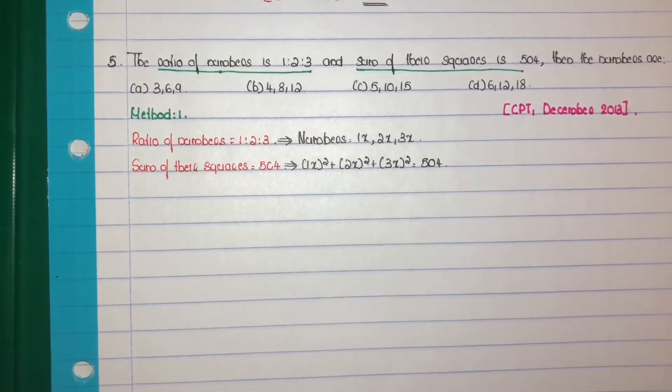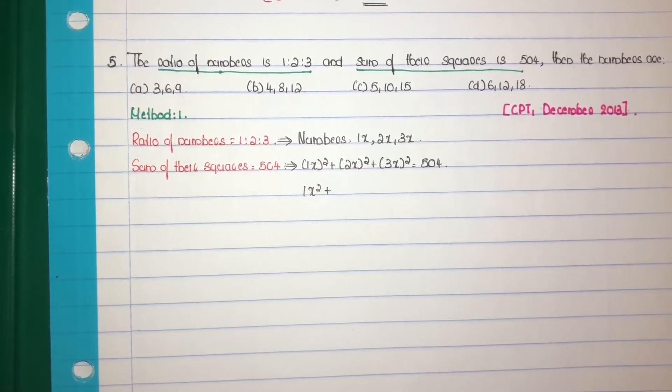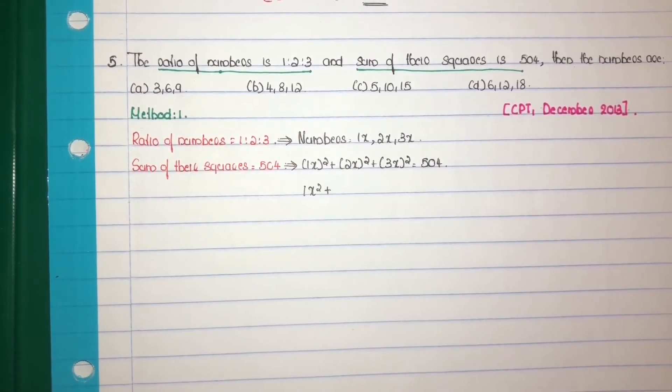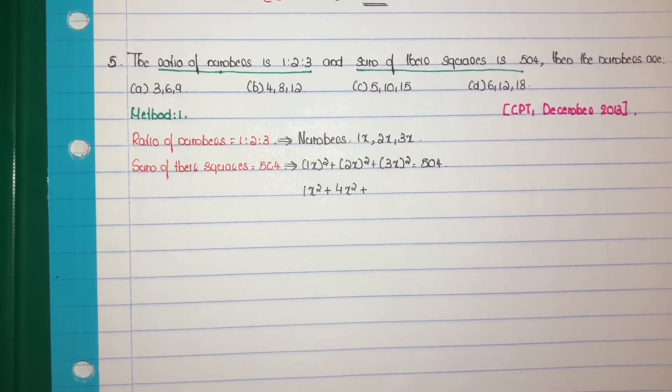Solve. 1x square plus 2x whole square, that is 2 square into x square, 4x square. Plus 3x whole square, that is 3 square into x square, that is 9x square. Equal to 504.